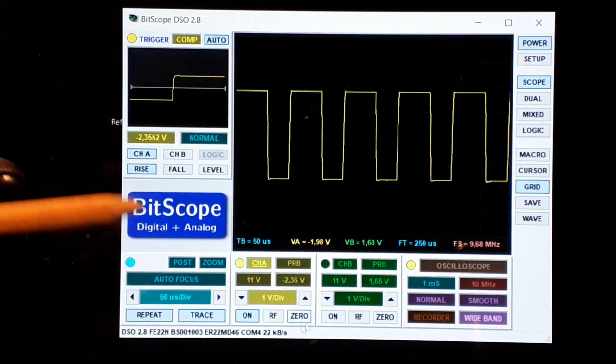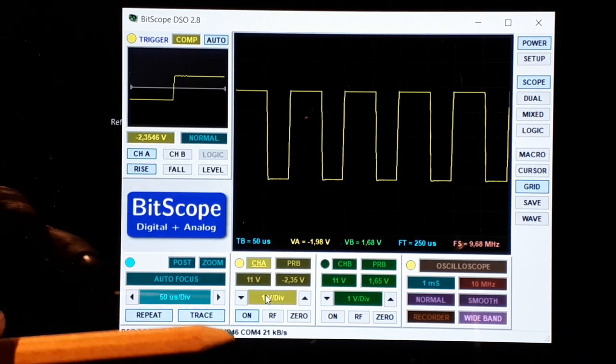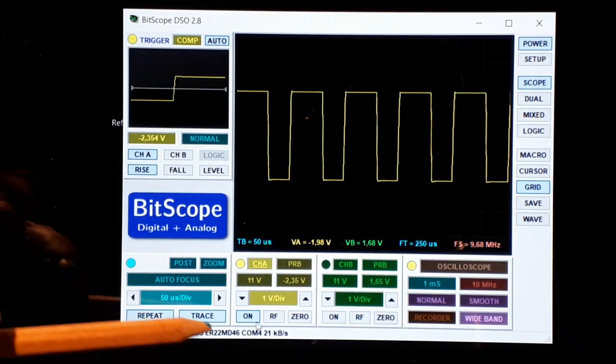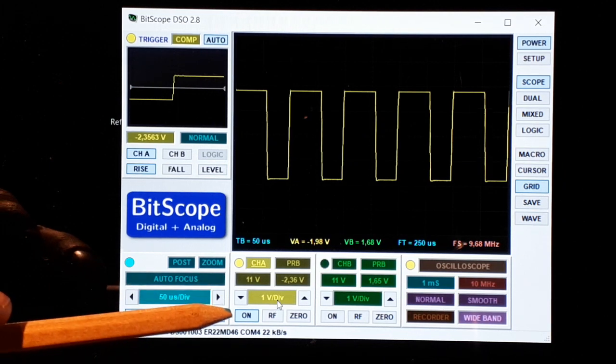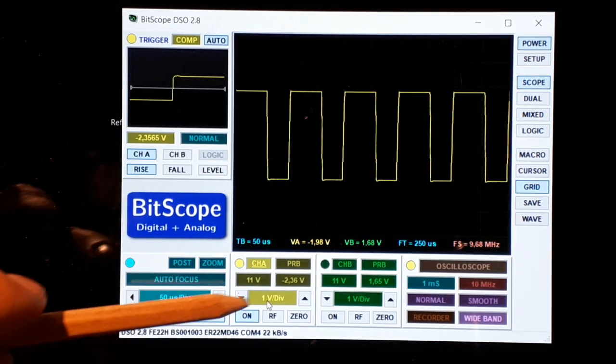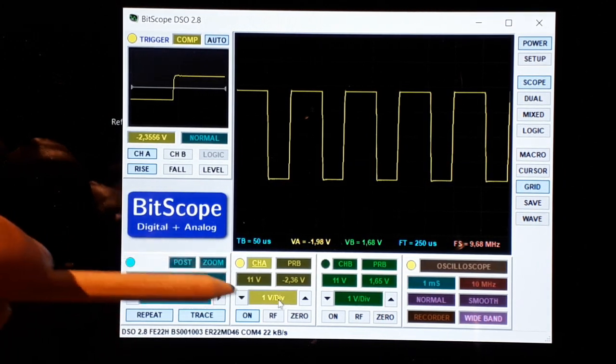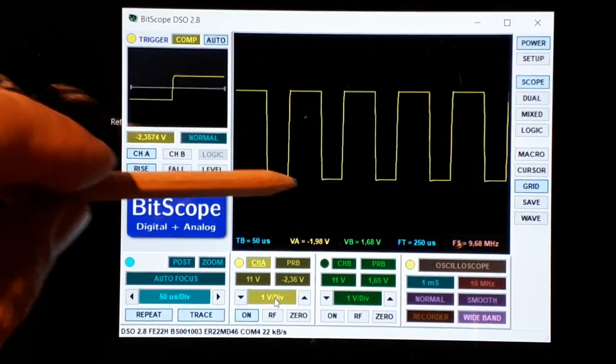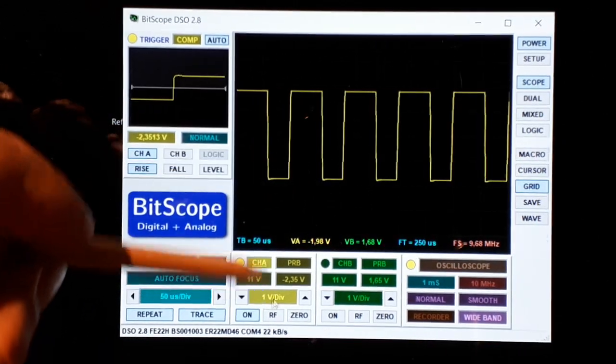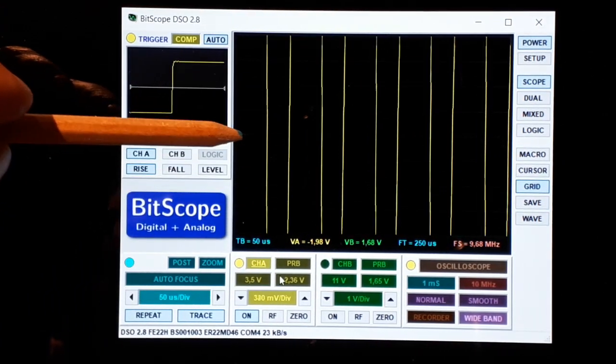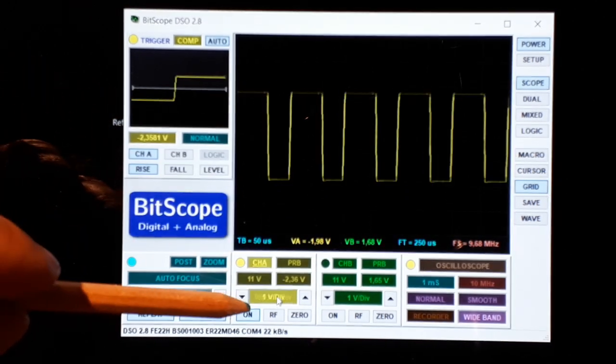So far we will see channel A. This one is for enabling, on or off, and here you have the scale in voltage and volts by division. From line to line there is one volt here and you could increase or decrease depending on what you're going to change.